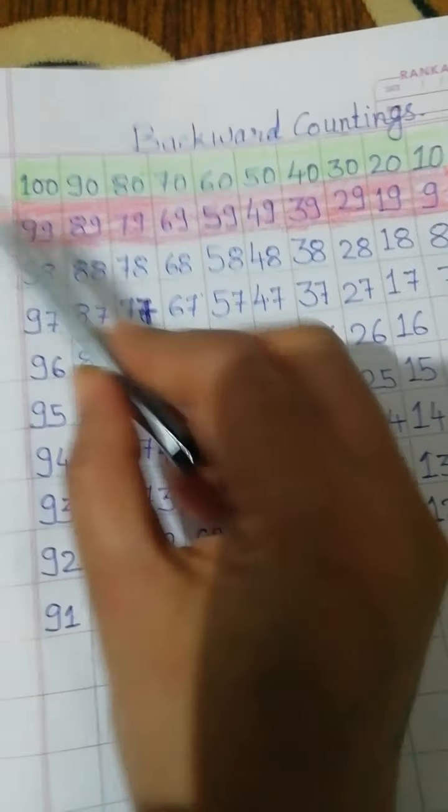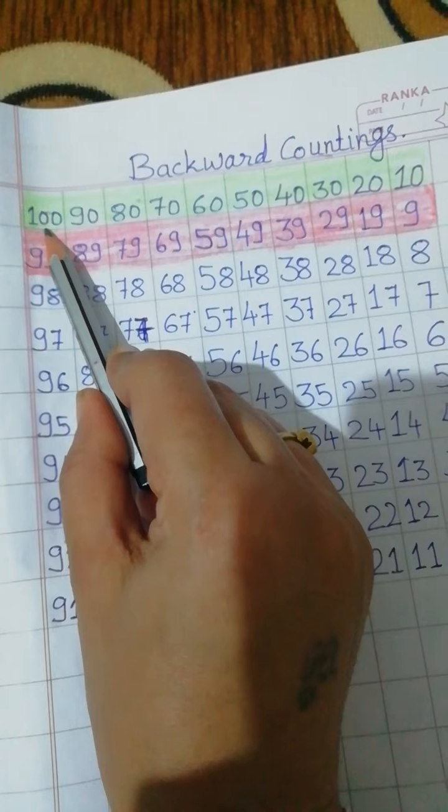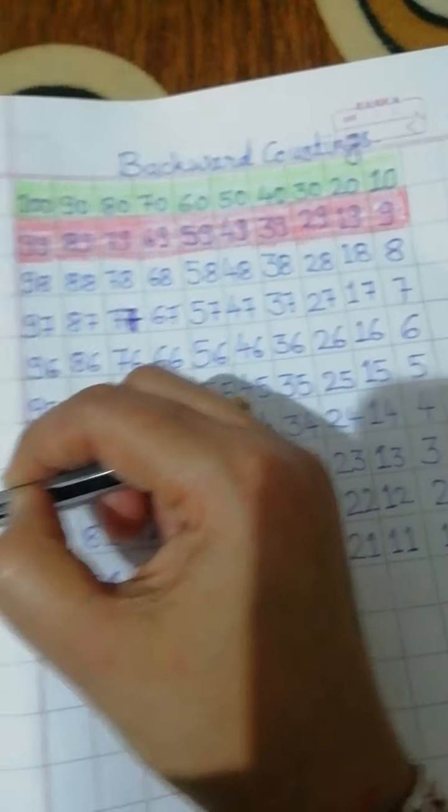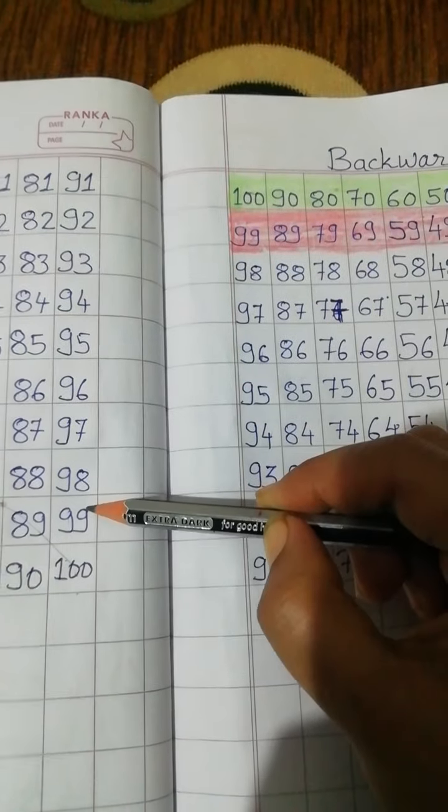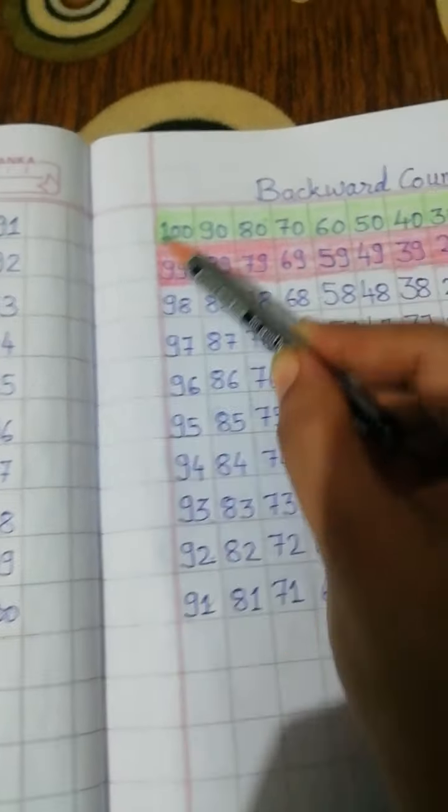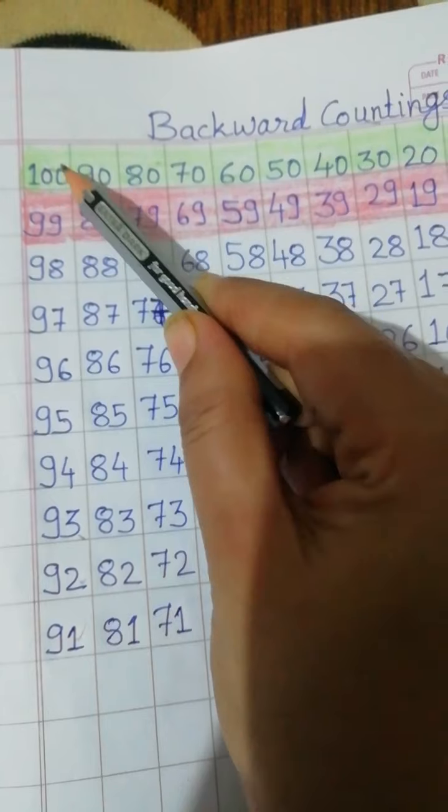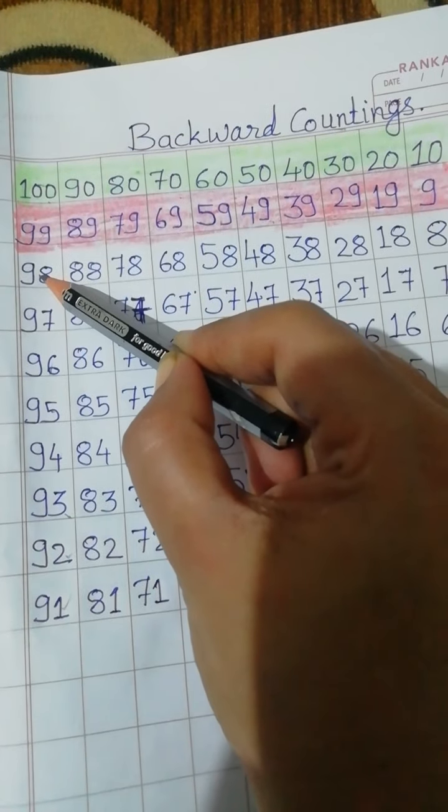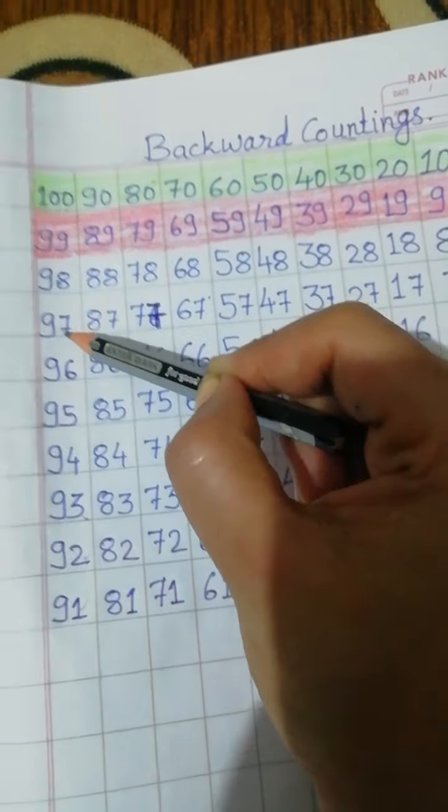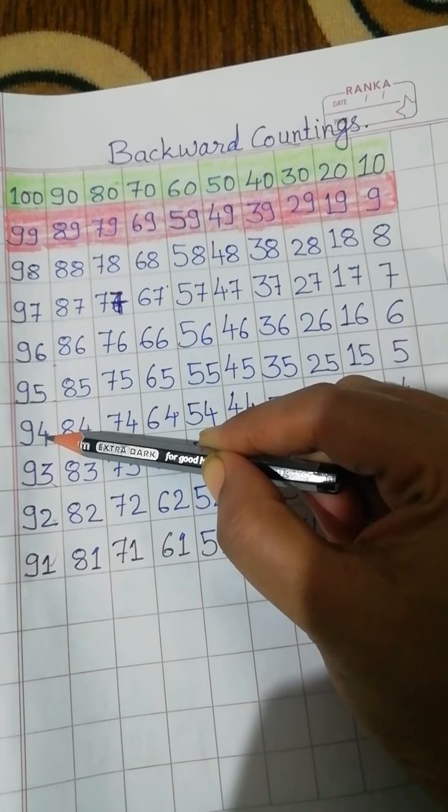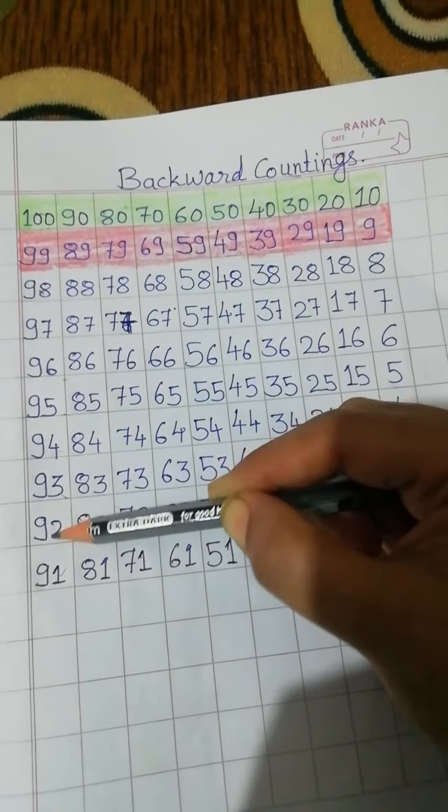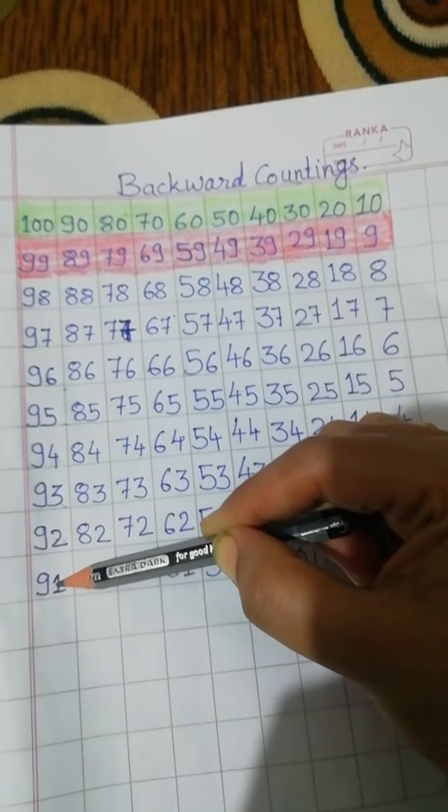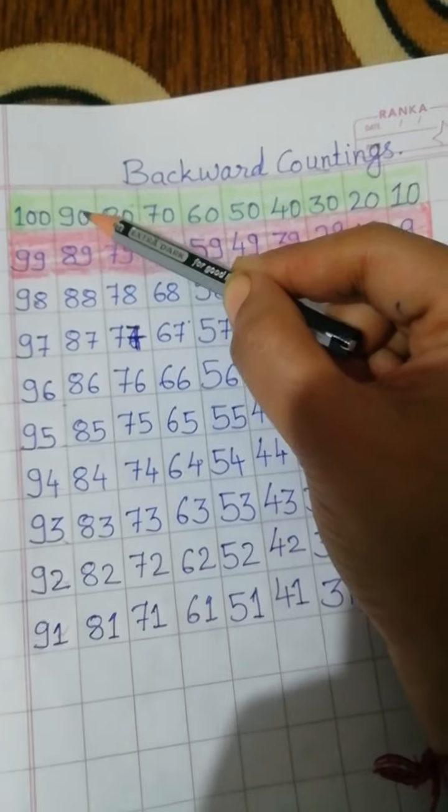Backward counting. First you have to write number 100 और यहाँ पहले 100 के पहले क्या है? 99. Same way हम उल्टा जाएंगे और backward मतलब reverse counting. 100, 99, 98, 97, 96, 95, 94, 93, 92, 91.